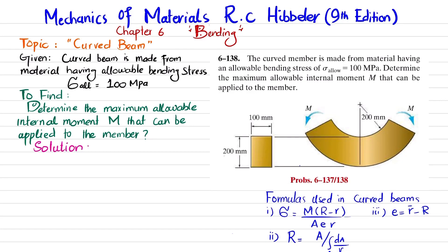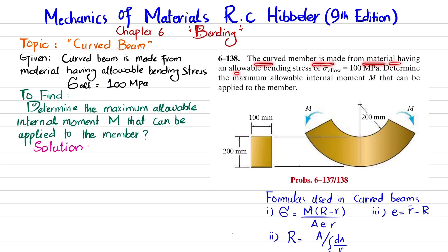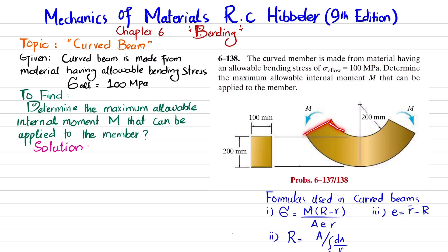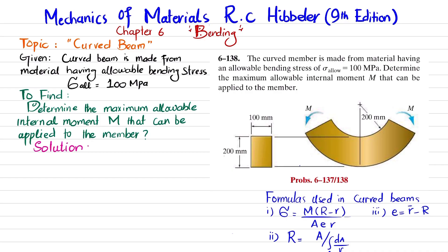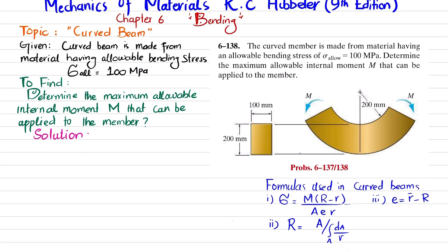Welcome back. In this video we are going to solve problem 6-138, taken from chapter 6 on bending from the book Mechanics of Materials by R.C. Hibbeler, 9th edition. The topic we are covering is curved beams. The curved member is made from a material having an allowable bending stress of 100 MPa. We need to determine the maximum allowable internal moment M that can be applied to the curved beam.